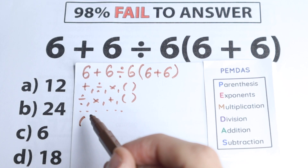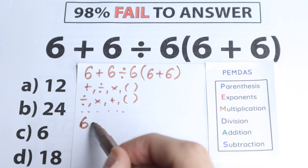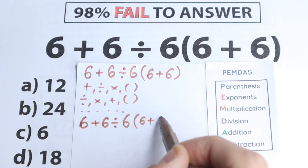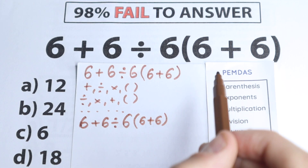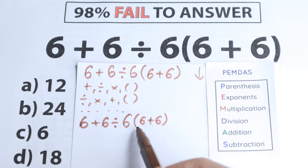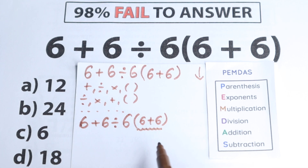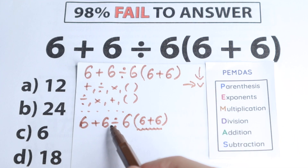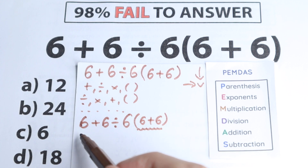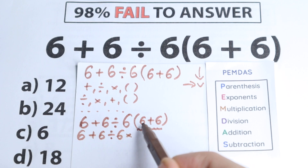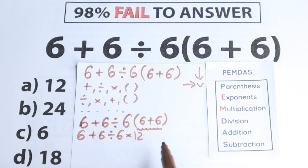Here's our question, so let's go. We have 6 plus 6 divided by 6, times 6 plus 6 in parentheses. The first step according to PEMDAS is parentheses. Where do we have parentheses? Here on the right-hand side. So we need to start with these parentheses — no addition, no division, no multiplication, but parentheses first. We have 6 plus 6 in parentheses equal to 12. This is our first step — we add 6 plus 6.